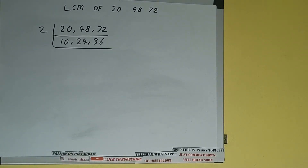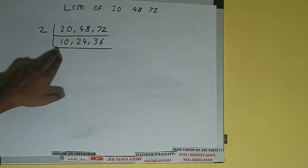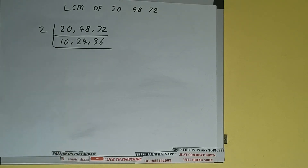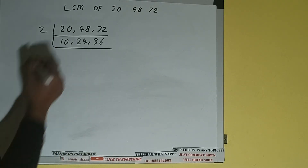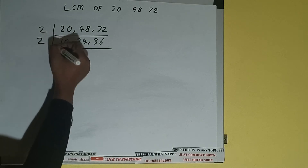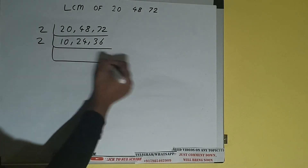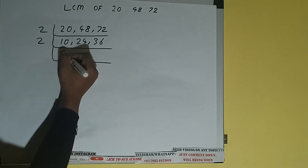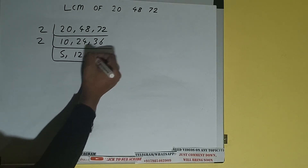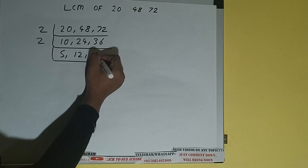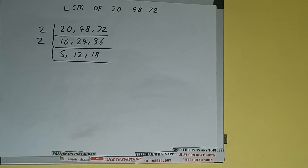Again we check — all three numbers 10, 24, and 36 can be divided by 2, so we'll divide. On dividing, this will become 5, this will become 12, and this will become 18.